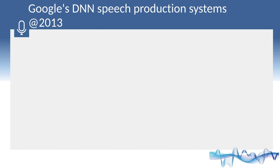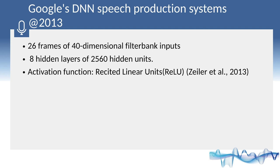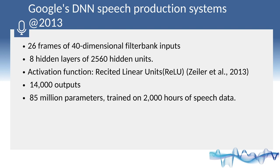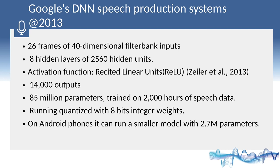Google's DNN speech recognition system in 2013 uses 26 frames of 40-dimensional filter bank features as input, 8 hidden layers of 2,560 hidden units, and ReLU activation functions proposed by Zeiler in 2013. There are 14,000 outputs, and the deep model has 85 million parameters, trained on 2,000 hours of speech data. On Android phones, it can run a smaller model with 2.7 million parameters.